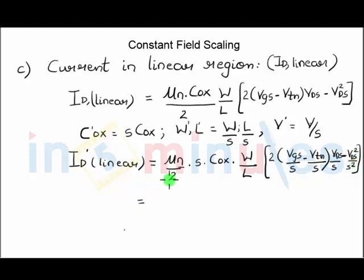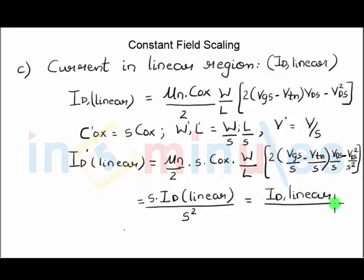So that is nothing but, if you see properly, ID linear. We'll take this s square common outside the bracket, so it's nothing but s into ID linear upon s square, which is nothing but ID linear divided by s. So we see in constant field scaling that the linear region current reduces by a factor of s.